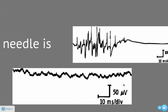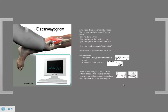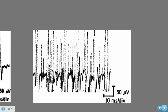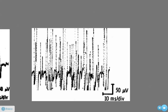Then the patient is asked to contract the muscle slowly, so a few motor units are observed in the beginning and the firing increases as the muscle effort increases. At maximum contraction, as we can see here, there are so many action potentials that it makes it hard to distinguish them individually.